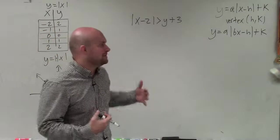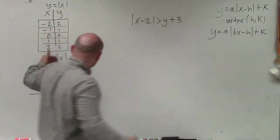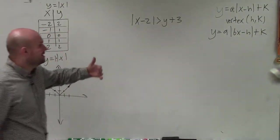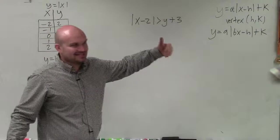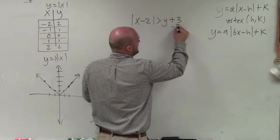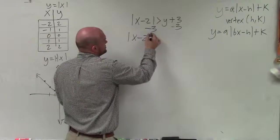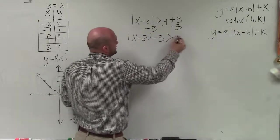Now, to graph this, basically what we've been doing is identifying the transformations when it's in this format, or this format, so it's solved for y. So I can see, since this is not solved for y, this is kind of making it a little confusing. So the first thing I want to do is isolate my variable y. So to do that, I'll subtract 3 on both sides. Therefore, I have the absolute value of x minus 2 minus 3 is greater than y.